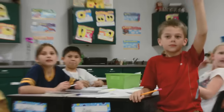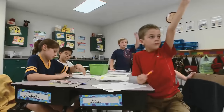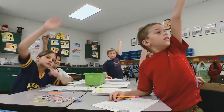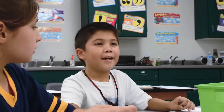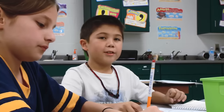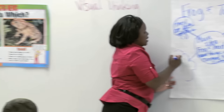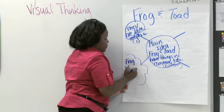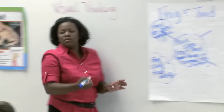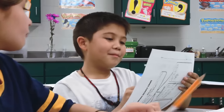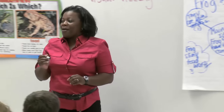Table two — tell me something that is different. Willem: Frog skin is slimy and toad skin is warty. Excellent. Frog skin is slimy, toad skin is warty. What paragraph did you find that in, Willem? Paragraph three.